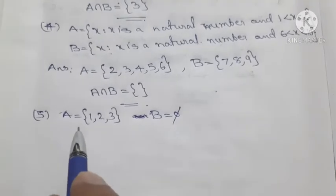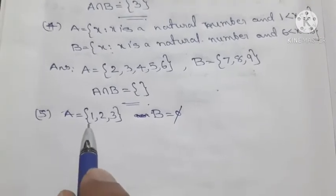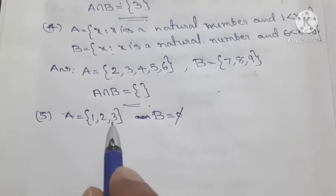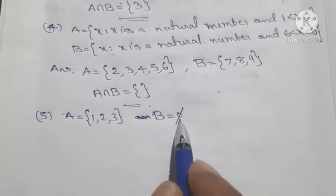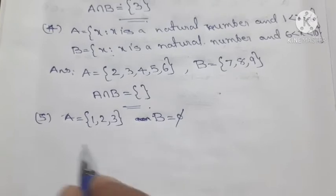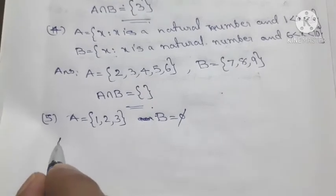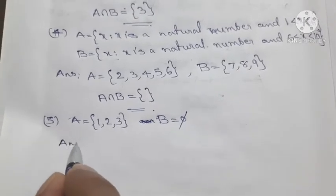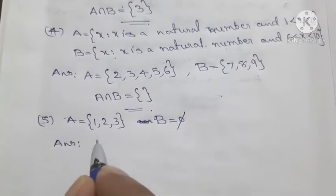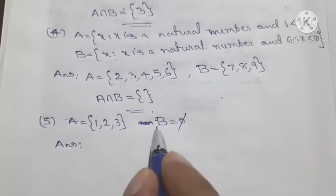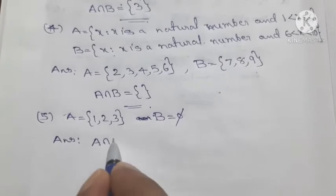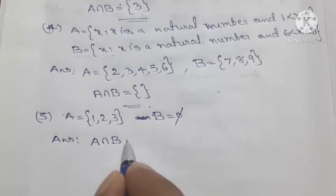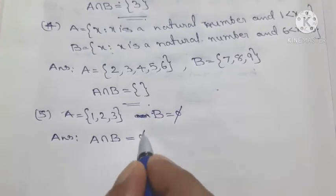A equals set {1, 2, 3}, B equals the empty set. The empty set means there are no common elements, so A intersection B is equal to the empty set.